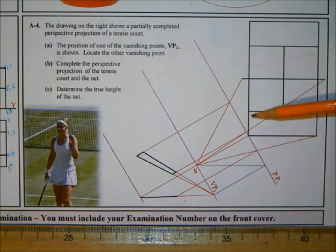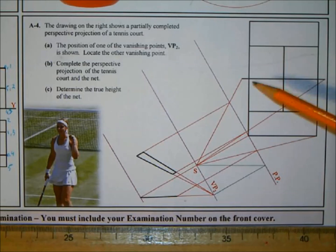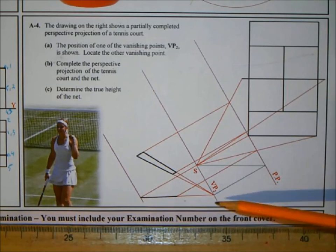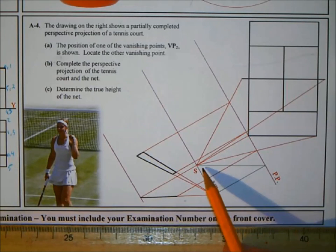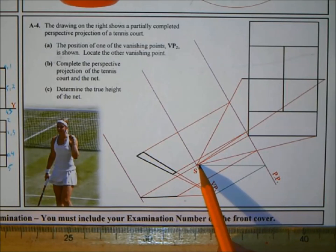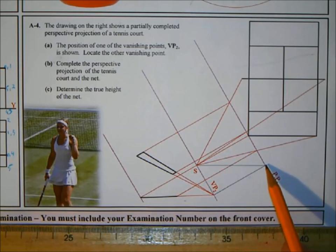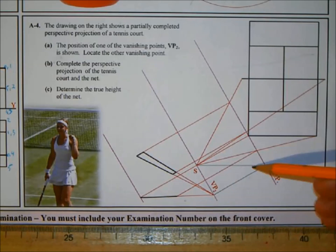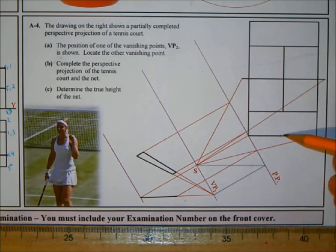We have our plan of the tennis court with the net going across, and the picture plane going through this corner. That corner is brought down, and our vanishing point VP2 is shown. To find a vanishing point, you go from the spectator at a certain angle out to the picture plane and project that down at your projection angle to give you the vanishing point on the horizon line. This angle is parallel to the edge of the object.